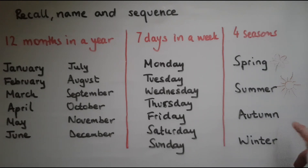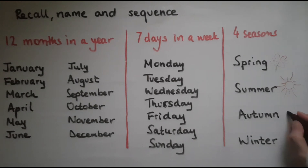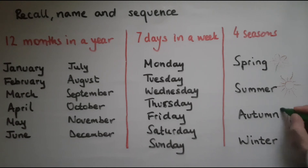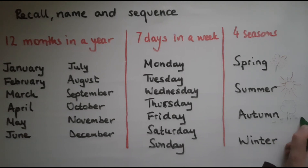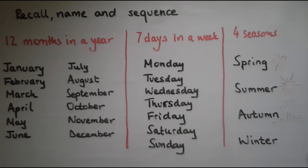Then autumn. Autumn is when the trees — the leaves on the trees start to fall. So that's what autumn is known for. And those months are September, October, November.